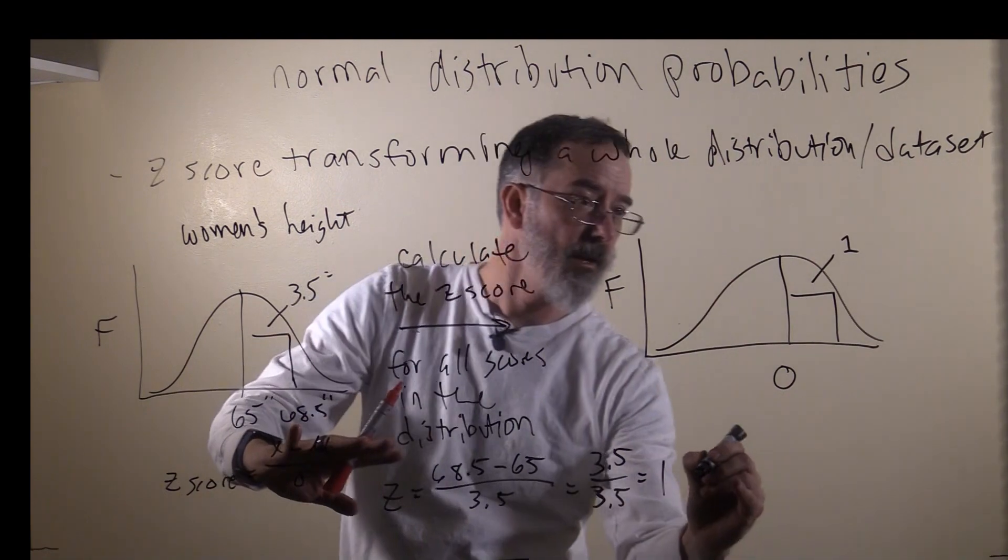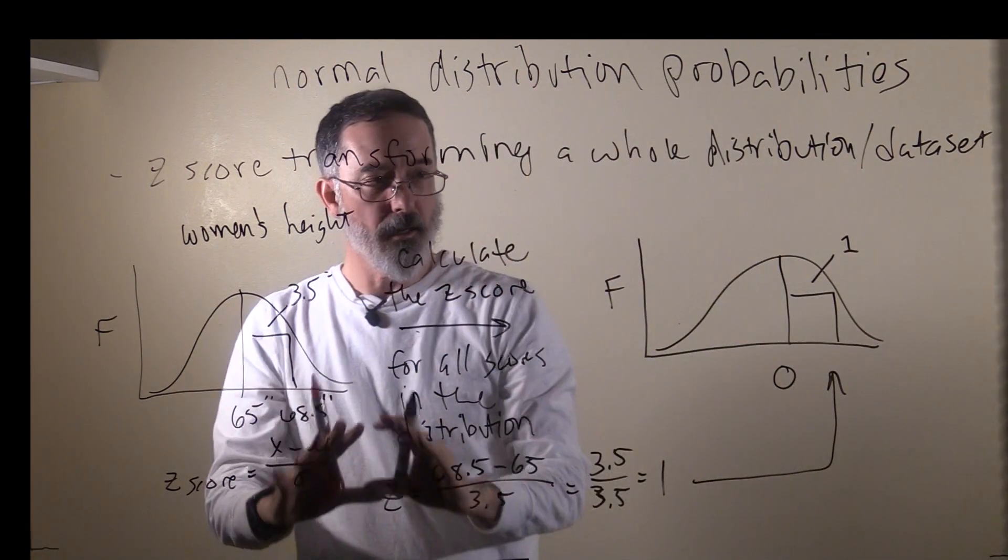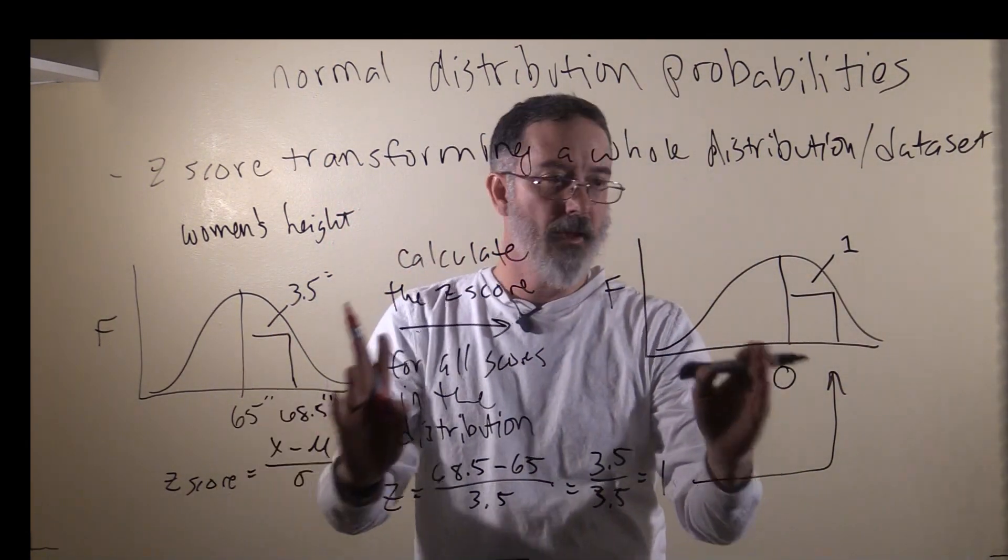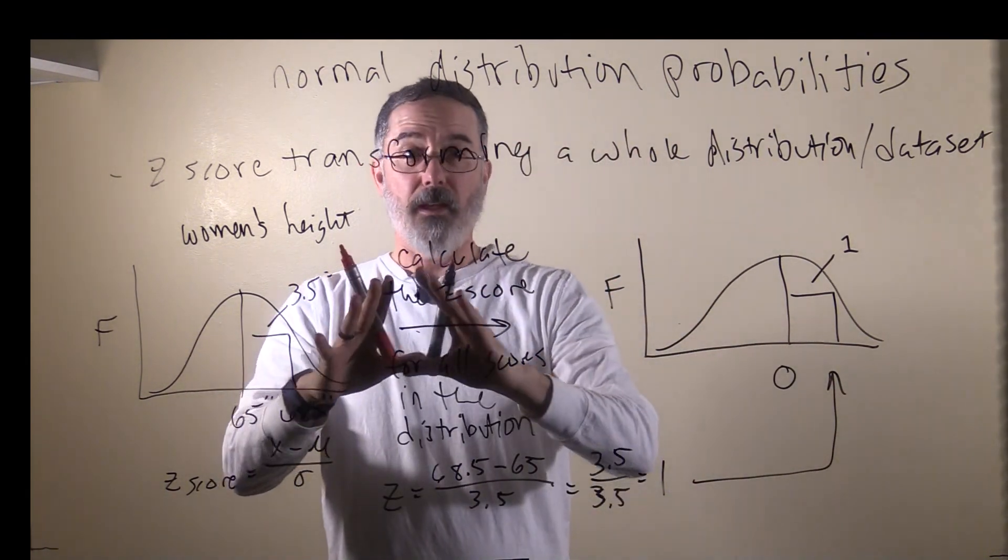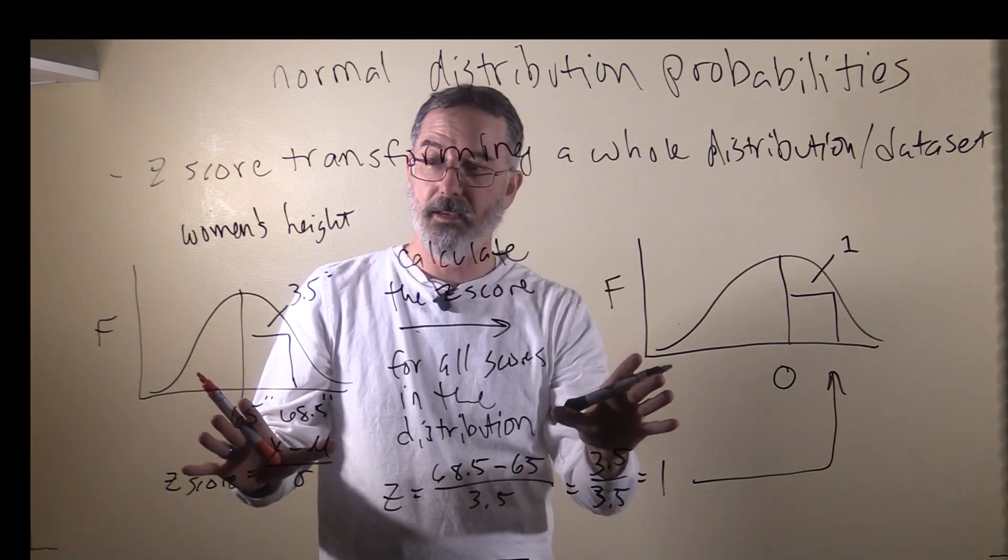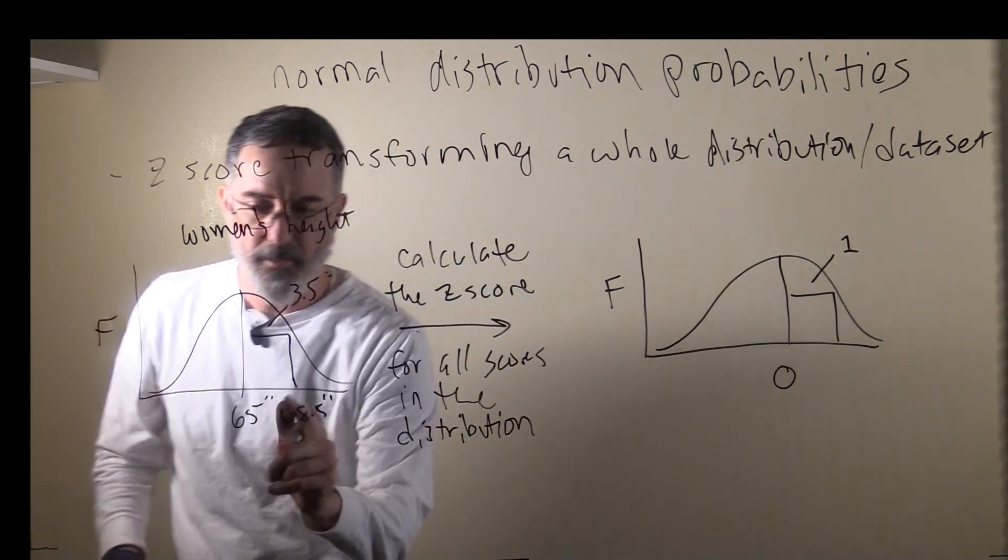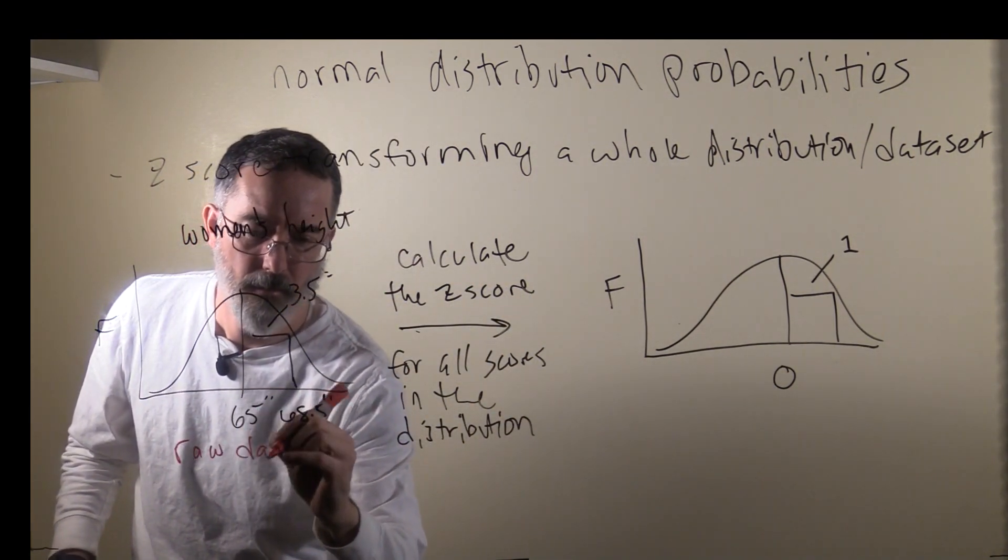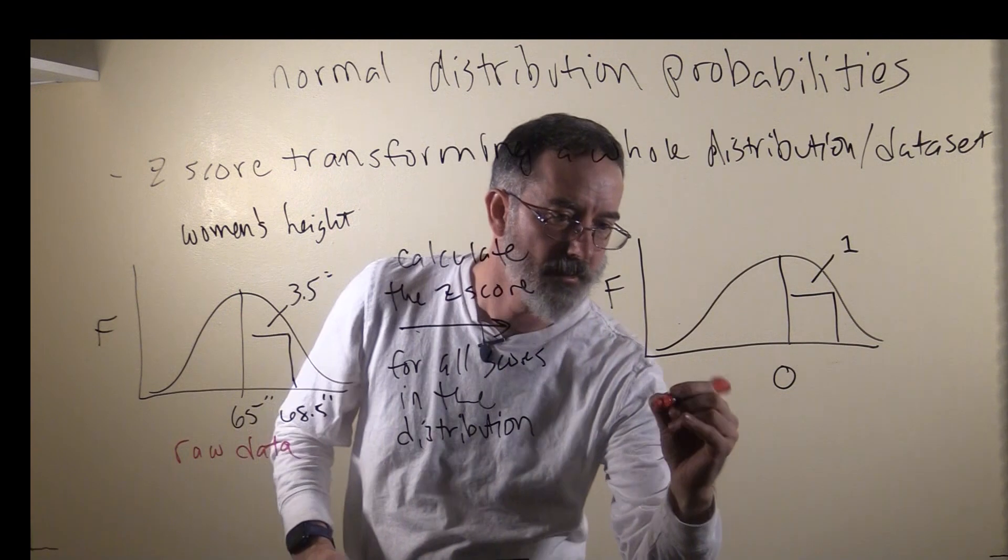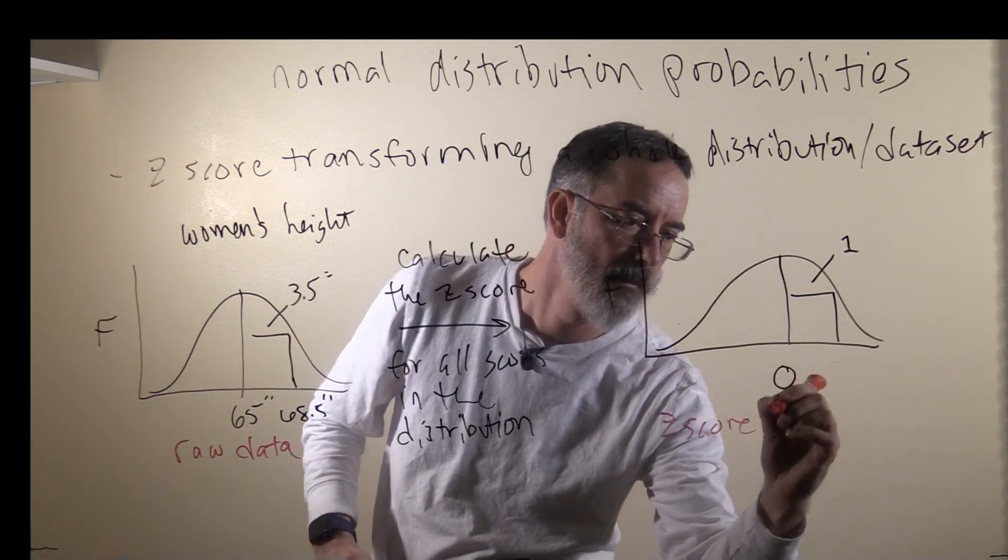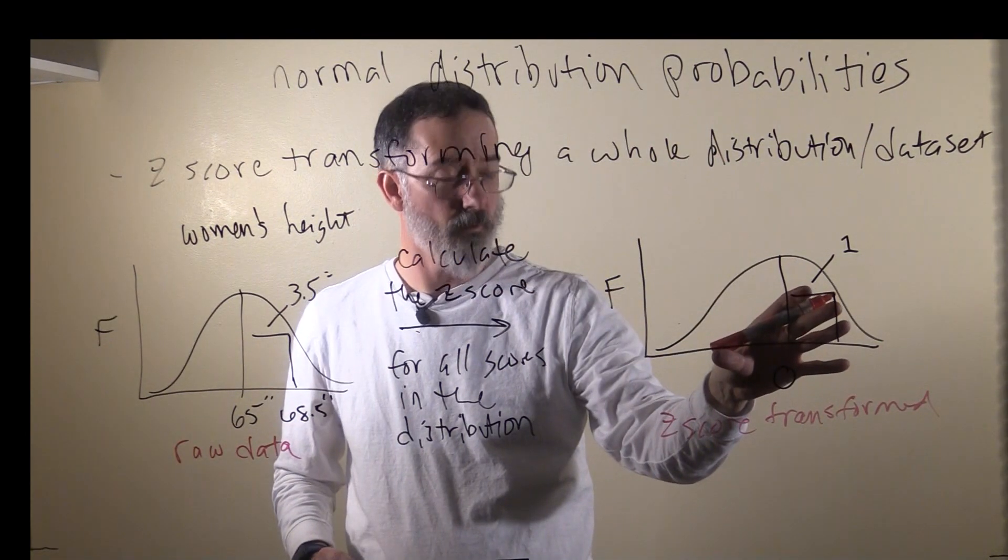All of the women at 68.5 are now over at 1. There's a 1-to-1 correspondence in the shape, such that the mean turns into a 0 and the standard deviation turns into a 1. That's what happens when you do a z-score transformation of any distribution. But in this case, we're focusing on the normal distribution. When we do this z-score transformation, we take this raw data in the original units of inches and transform it so that it's now all z-score transformed data.